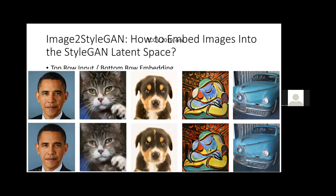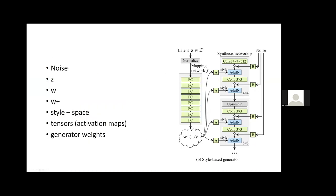This is very early work — Image2StyleGAN — that we worked on. In a more extended space called W+, you can embed faces such as Obama, but you can also embed a cat, a dog, a painting, and a car. The obvious conclusion is that while you can embed faces nicely, the fact that you can embed other things is more like a worry: the embedding cannot really be semantically meaningful when a GAN trained on faces tries to manipulate a car. The space is too expressive — it's possible to just overfit and embed nonsense.